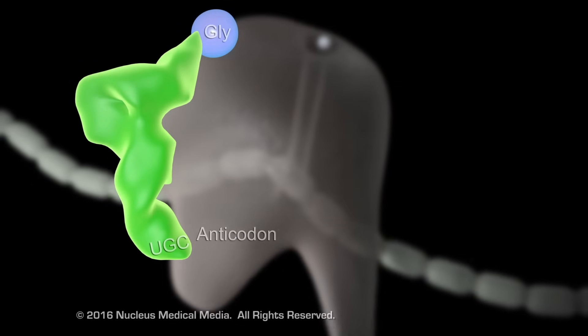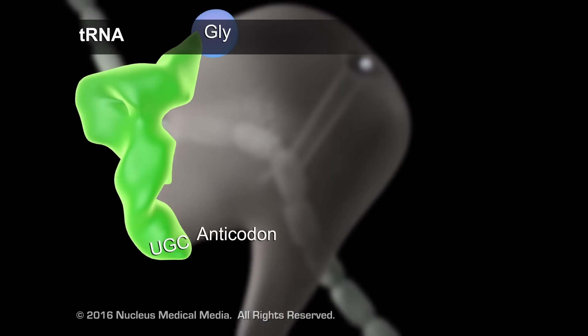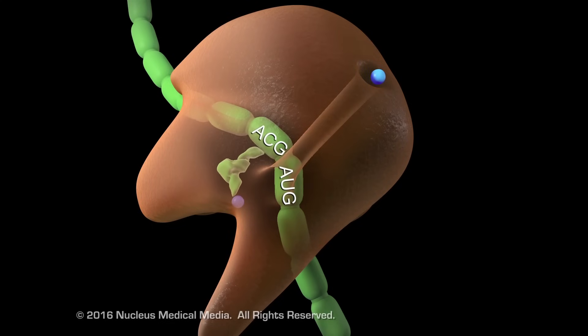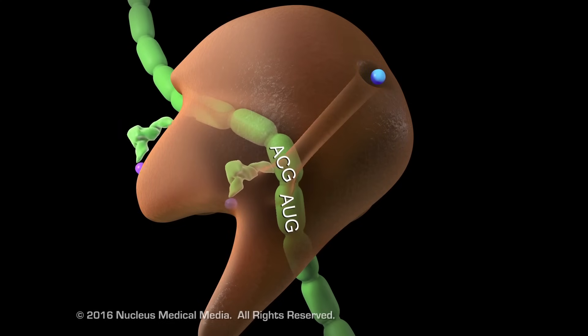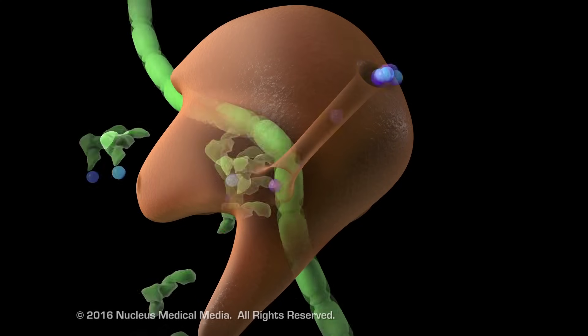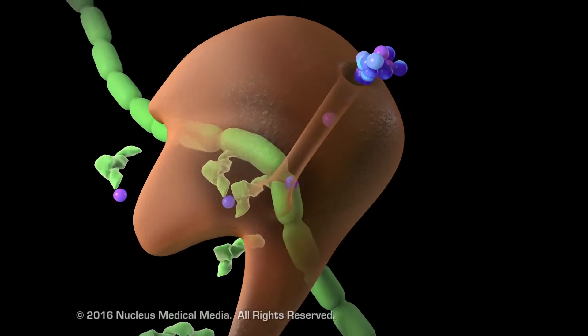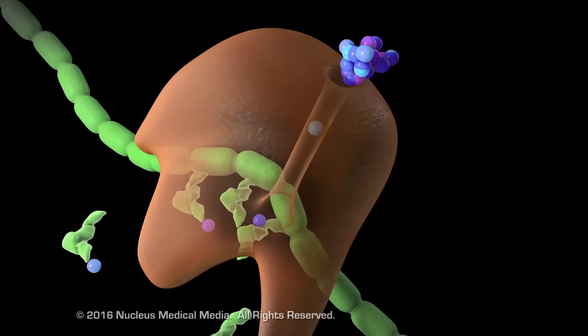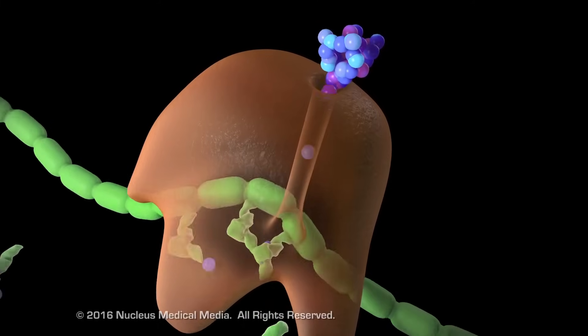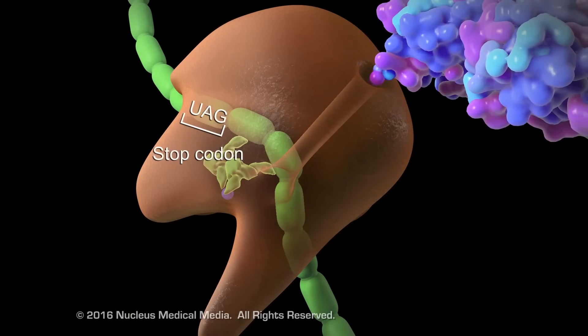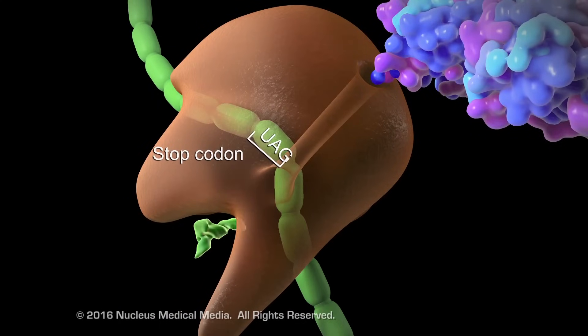Each codon signals a transfer RNA molecule that has the matching anticodon sequence and specific amino acid. The process continues as additional transfer RNA molecules attach, bringing the correct amino acids to build the protein, until the protein is completely assembled, signaled by the stop codon.